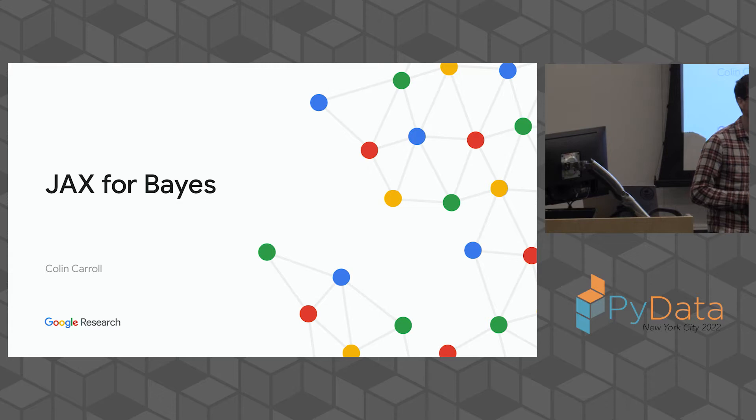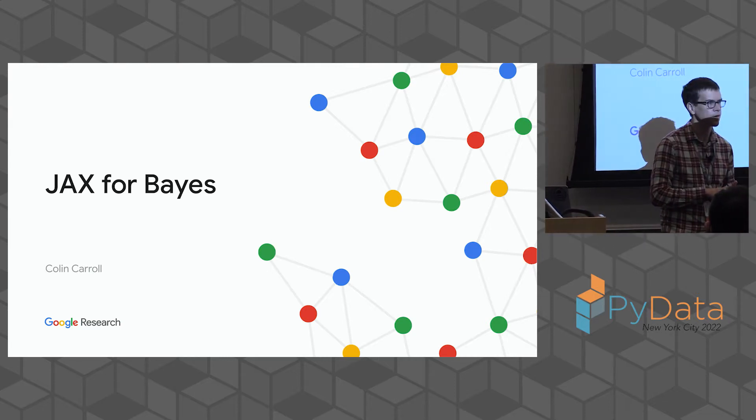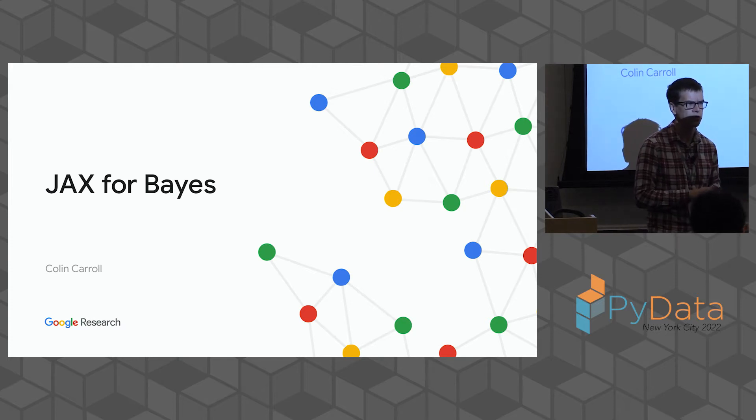So the talk today is on JAX for Bayes. I'm going to be talking a little bit about doing Bayesian analysis, Bayesian probability in JAX and generally giving an outline of what the whole ecosystem looks like.